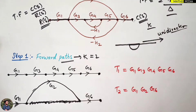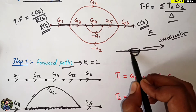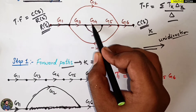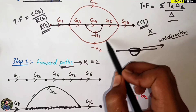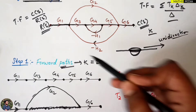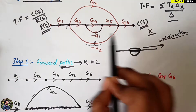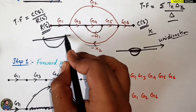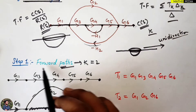An important condition for forward paths is that you cannot repeat the same path. If you start from a node, reach another, and then find yourself repeating the same nodes, that is not valid. You should not repeat the same path — this is the condition for a forward path. Carefully observe the directions and you can correctly identify the forward paths.